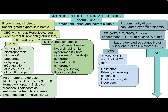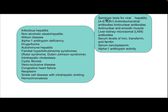If the bilirubin is predominantly direct (conjugated hyperbilirubinemia), send the patient for liver function tests: AST, ALT, GGT, alkaline phosphatase, PT, serum glucose, and albumin. If laboratory studies are suggestive of biliary obstruction — such as elevated GGT — obtain ultrasound or CT scan (helical CT). Differential diagnosis may include gallstones, primary sclerosing cholangitis, choledochal cysts, and tumors.